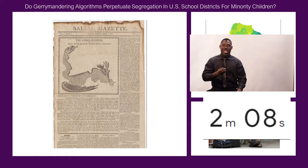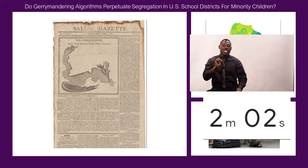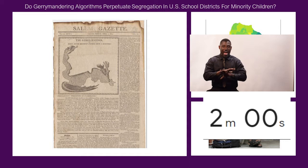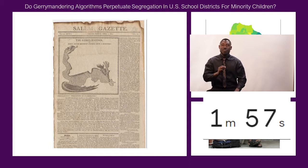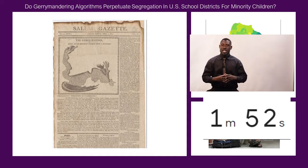Look at the images on the slide. What does an old newspaper from 1812 with a monster shape have to do with a district map or a school child? Everything. The monster shape is the first record of a gerrymandered district, and its effect, like other historical wars, has been devastating.